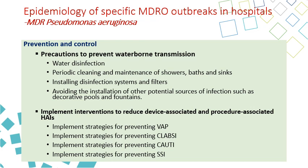For preventing waterborne transmission, ensure water disinfection and periodic cleaning and maintenance of showers, baths, and sinks, as these areas harbor Pseudomonas. Replace fixtures if old and leaking, install disinfection systems and filters in the hospital, and avoid installing potential sources of infection such as decorative bowls and fountains, as they can distribute mist containing Pseudomonas aeruginosa.